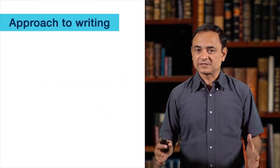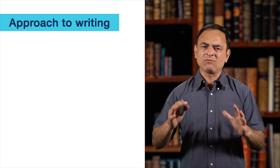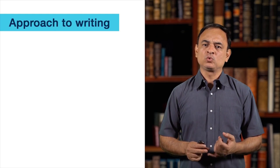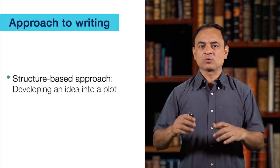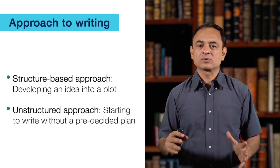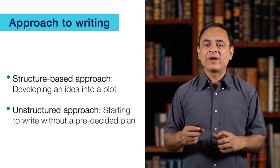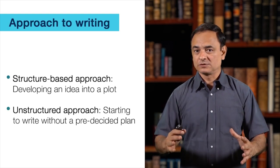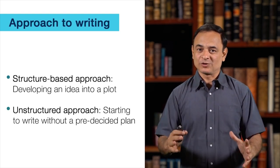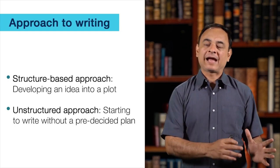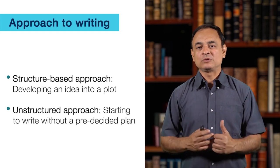The second step is the approach or the process. There are basically only two kinds of approaches: the structured approach and the unstructured approach. Structured approach is when you actually plan out your novel, which is also known as plotting your novel. Unstructured approach is you have an idea and you just start writing.